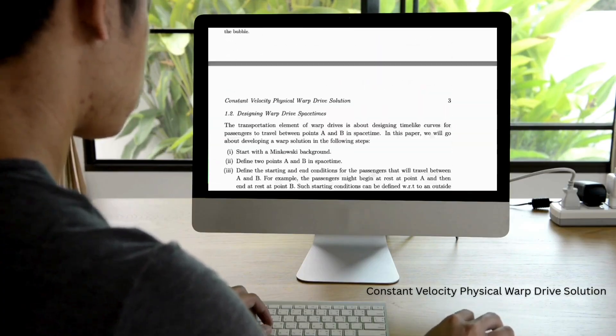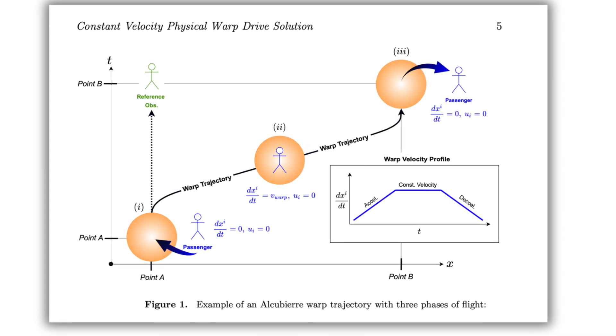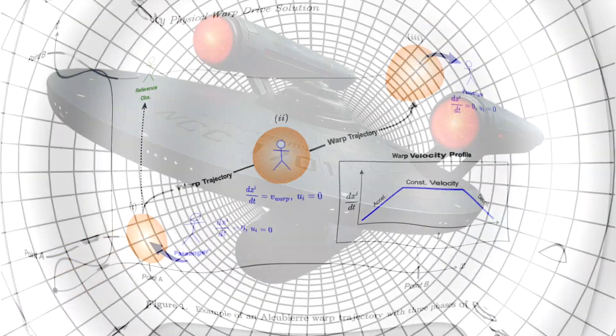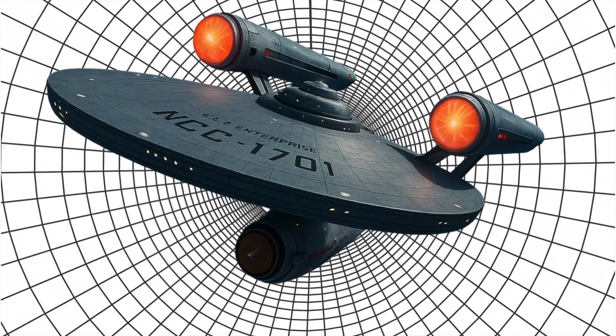They then used a tool called the warp factory to simulate the geometry of space-time and test the energy requirements numerically. The result: the model satisfies NEC, WEC, SEC, and DEC. Those are the null, weak, strong, and dominant energy conditions.